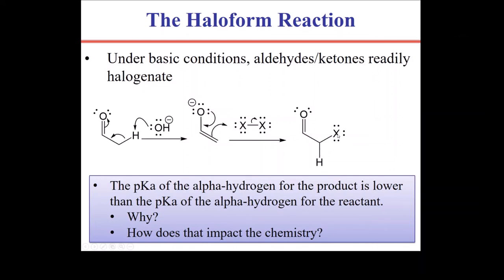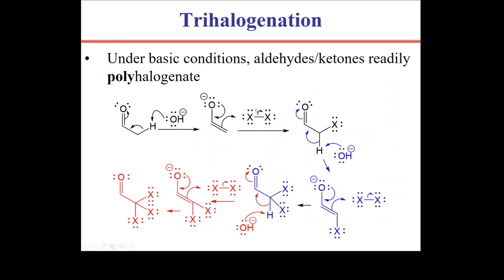This hydrogen right here has a pKa in the ballpark on an aldehyde of 15 to 17. Once you put the first halogen on there, then the remaining hydrogens now have an even lower pKa, because the electron-withdrawing nature of the halogen will enable this hydrogen to leave more readily. It's more acidic, lower pKa. And that means that the hydroxide is going to start to pluck off that hydrogen at a higher rate than it plucks off that hydrogen. And the result is you end up with three halogens at the alpha position.